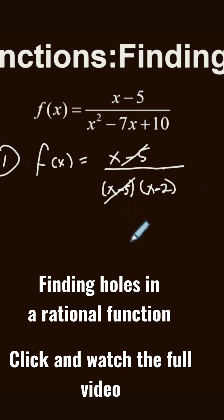This is the first step to simplify, and as soon as you cancel one expression, that expression x minus 5, that cancels with the one in the denominator creates a hole. So we equal that expression to zero.